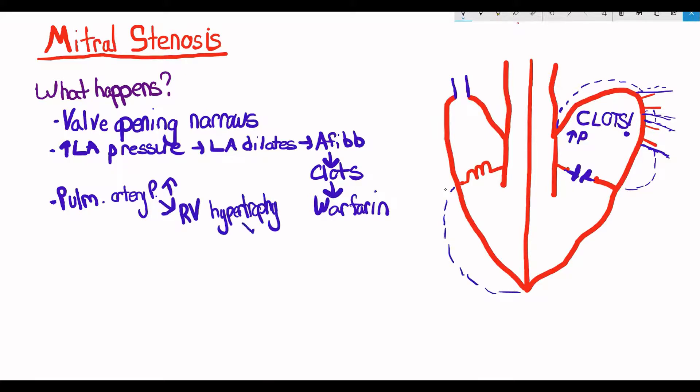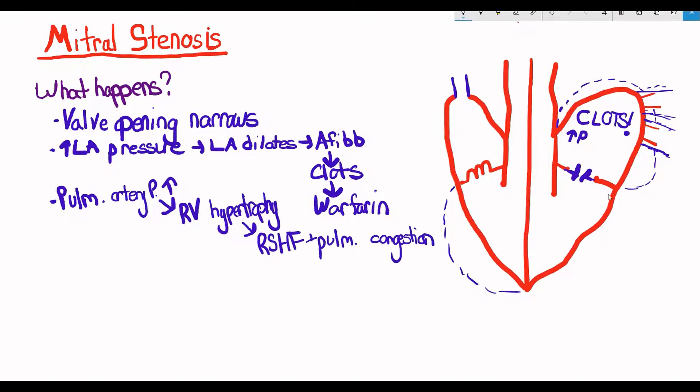The increased pressure in the lungs causes pulmonary congestion. So your right ventricle hypertrophies, gets bigger, to be able to push against the higher pressure.